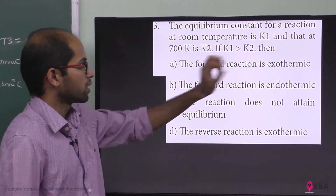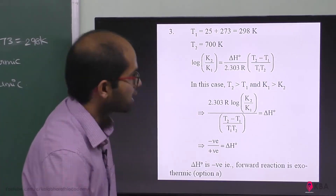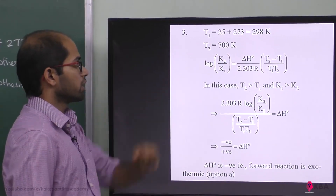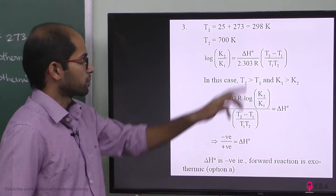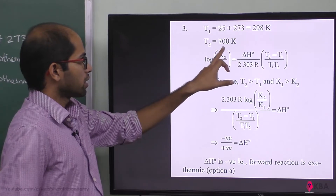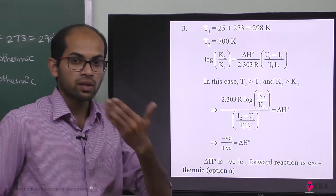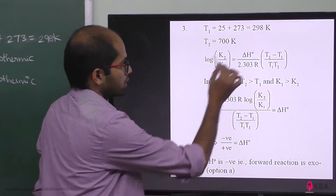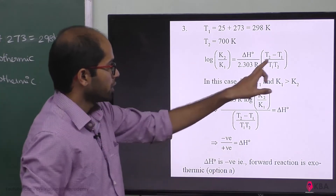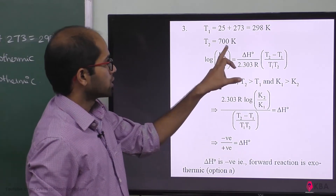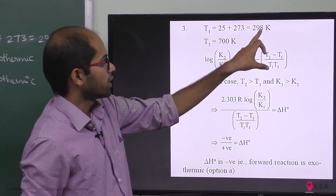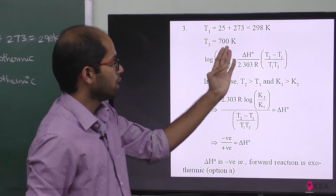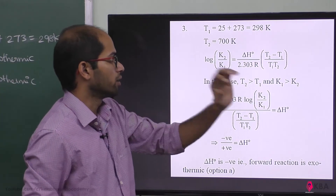Given K1 is greater than K2, and T1 is 298 Kelvin while T2 is 700 Kelvin. In the Van't Hoff equation, we compute T2 minus T1, which is 700 minus 298 Kelvin, and T1 times T2, which is 700 times 298.